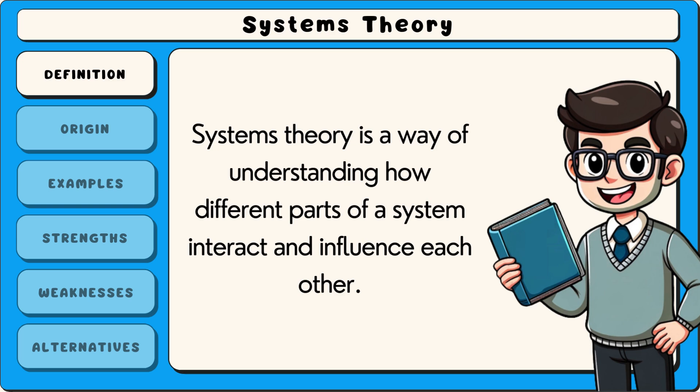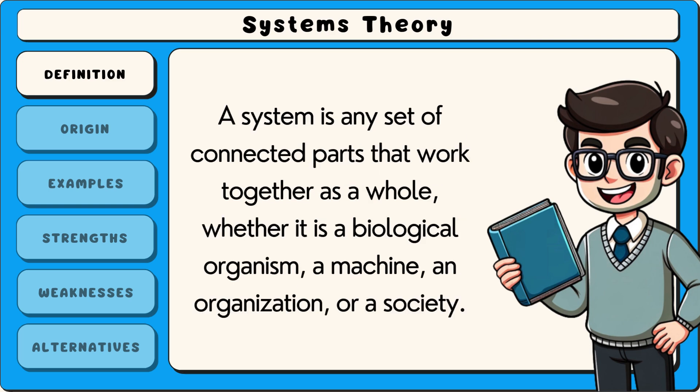Systems theory is a way of understanding how different parts of a system interact and influence each other. A system is any set of connected parts that work together as a whole, whether it is a biological organism, a machine, or an organisation or a society.